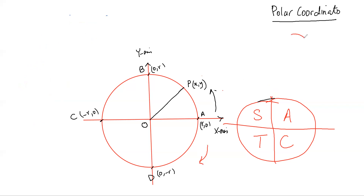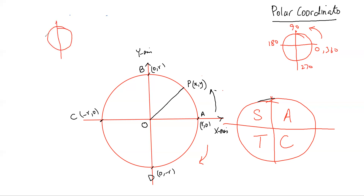Going in the anti-clockwise direction: this is 0, this is 90, this is 180, this is 270, and this is 360. Going in the clockwise direction: this is 0, minus 90, minus 180, minus 270, and so on. Can someone tell me what we call the angle measured from the original x-axis — is it the general angle or the basic angle?